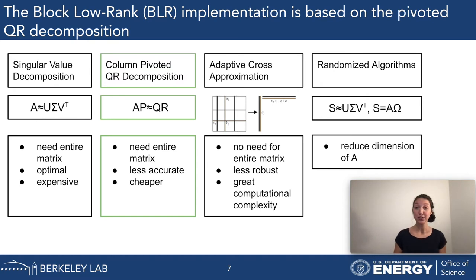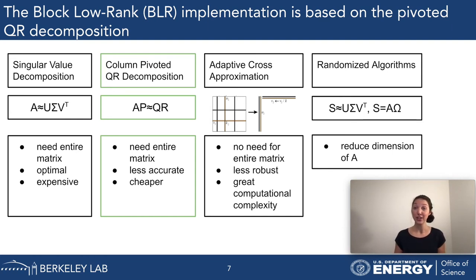There are other options as well, like adaptive cross-approximation or randomized algorithms. These are better in some ways and more challenging in others, because they do not need the entire matrix, which is great for computational complexity.